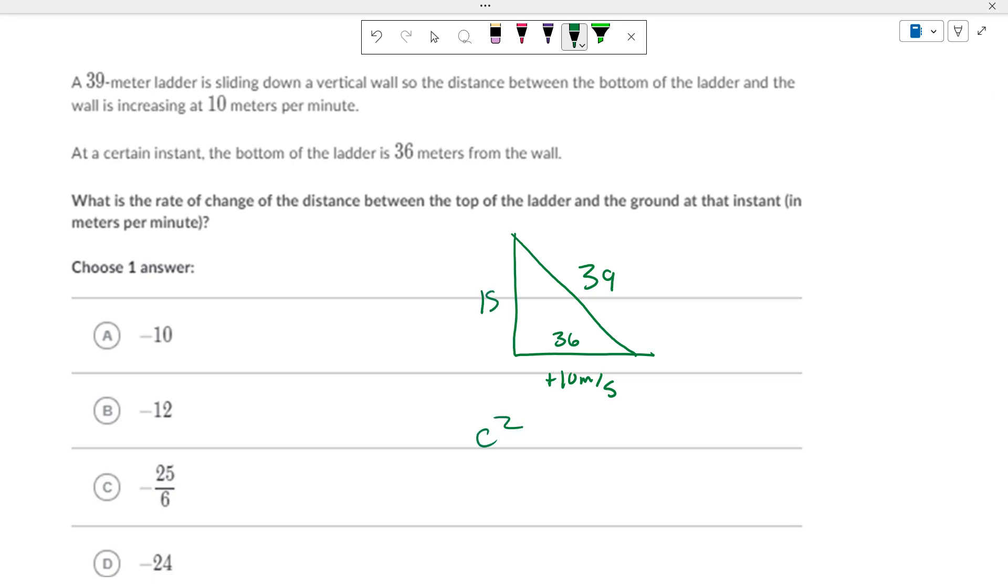So, c squared equals a squared plus b squared. So, 2c dc/dt equals 2a da/dt plus 2b db/dt. So, dc/dt is 0. So, 2 times 39 times 0, because it's not changing in length, equals, if the bottom is a, 2 times 36 times 10,